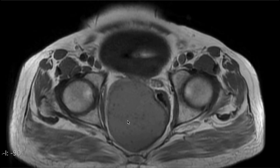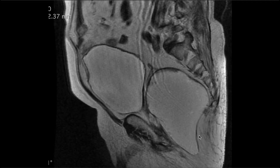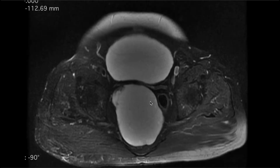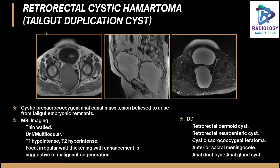Coming to the second interesting case: this was a 60-year-old male who presented with constipation and occasional bowel obstruction symptoms. On T1 imaging, a slightly hyperintense lesion with debris compressing the rectum is appreciated. On sagittal imaging, an epithelial-lined lesion displacing the rectum and prostate is visible. This is a classical case of rectal cystic hematoma, also called tailgut duplication cyst — a cystic pre-sacrococcygeal anal canal mass lesion believed to arise from the remnants of the tailgut.